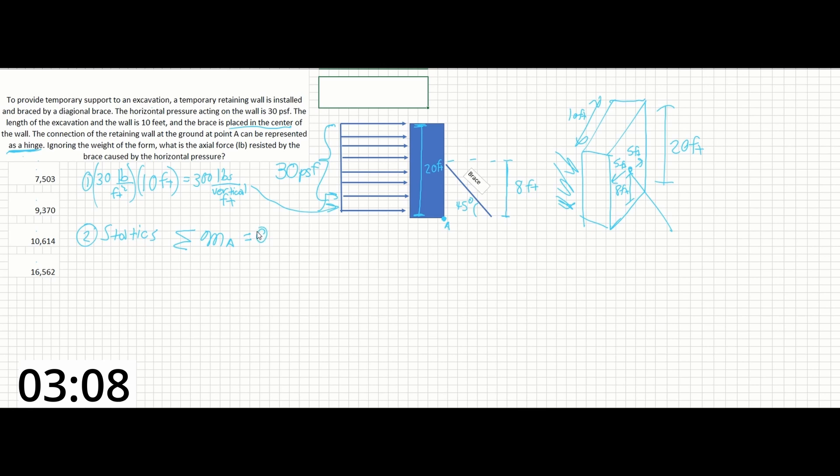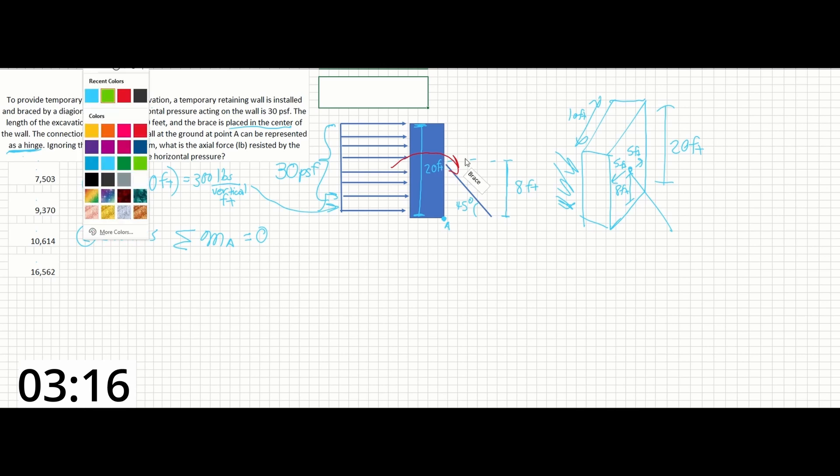So our first force is the rotational force about point A from the wall. This will be resisted by the counter-rotational force of the brace that is supporting the wall, and those are going to cancel out.